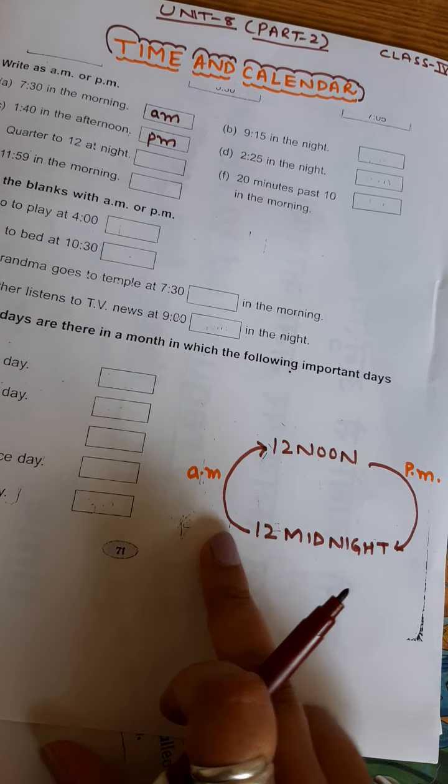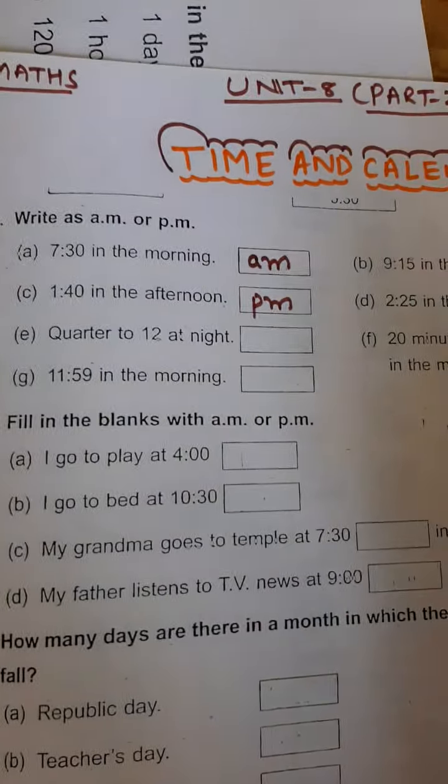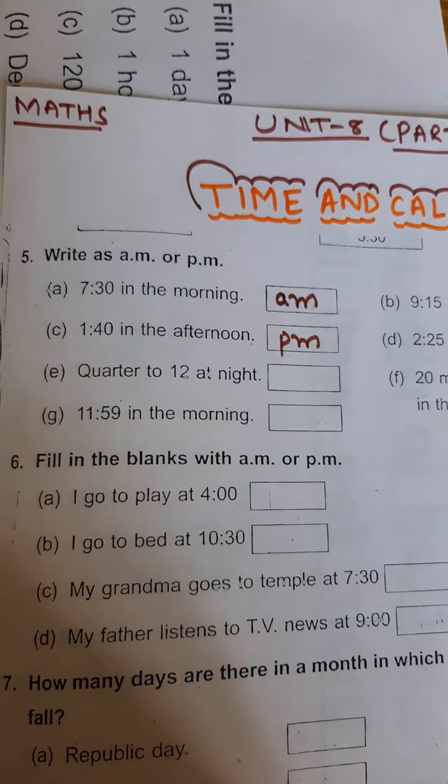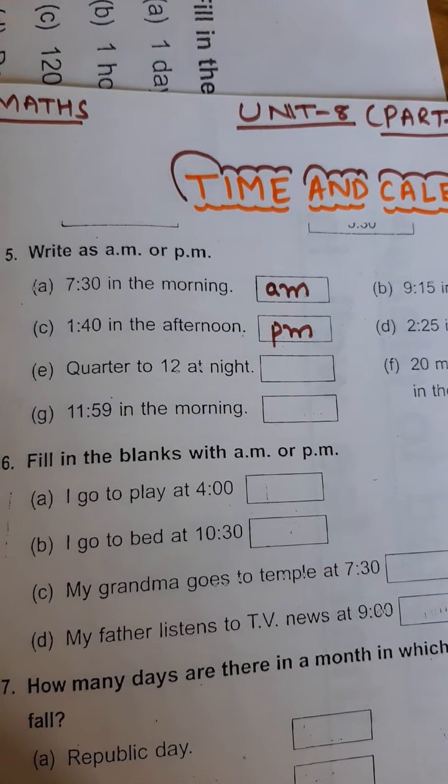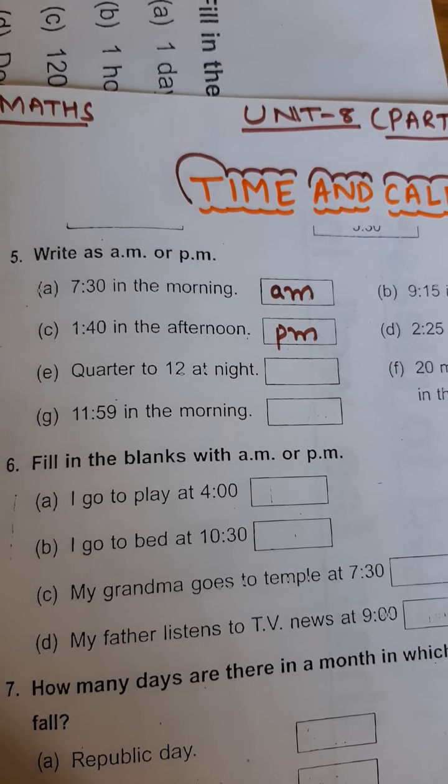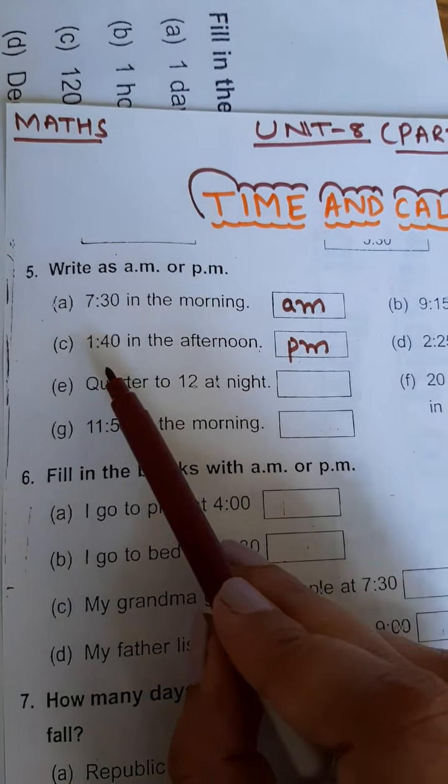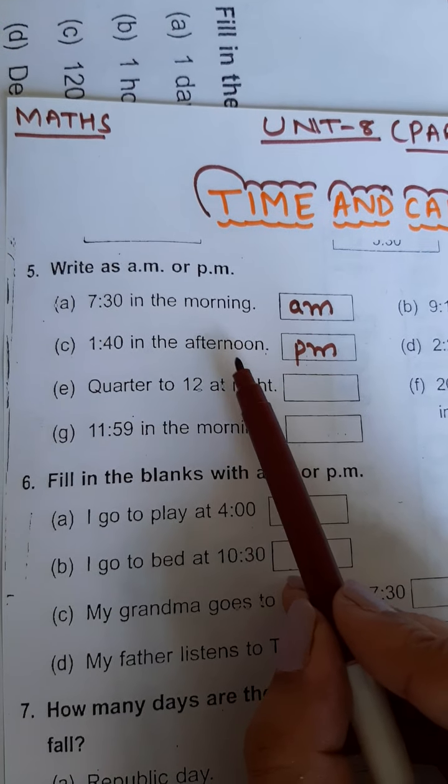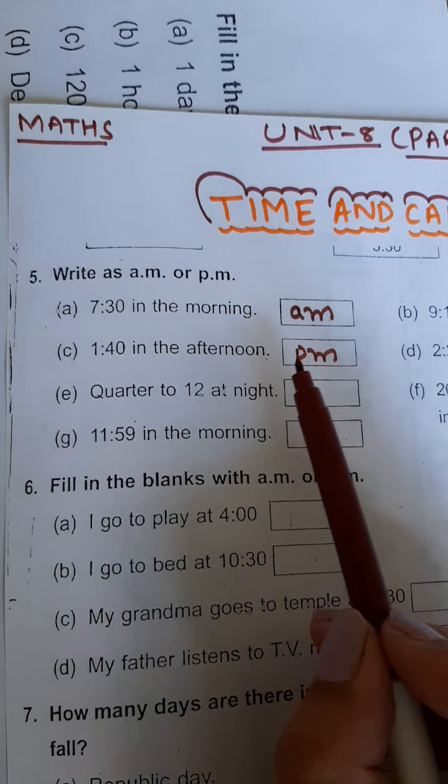Let us understand this by doing these questions. Question number 5 is write AM or PM. Here, 7:30 in the morning means the time is between 12 midnight to 12 noon, so we will write AM. And 1:40 in the afternoon means the time is after 12 noon, so this is PM.